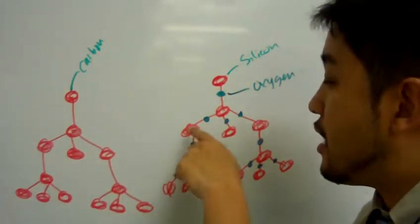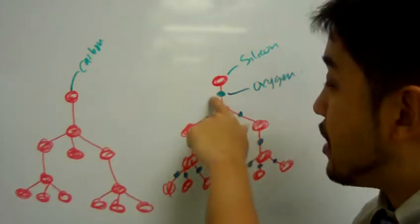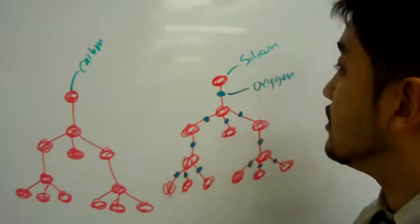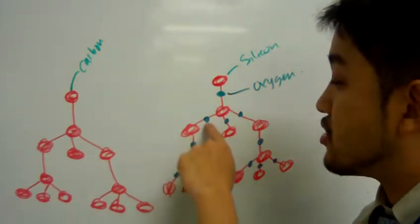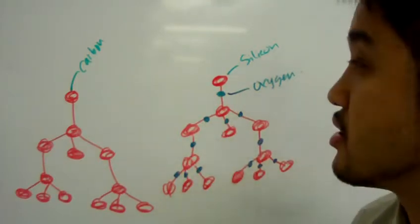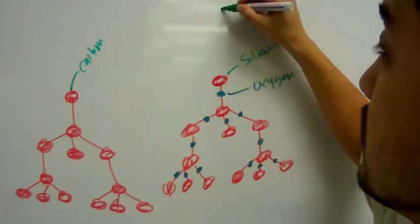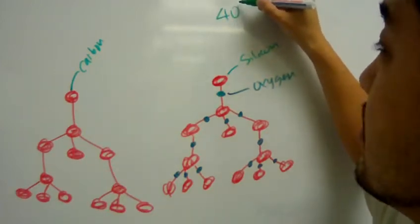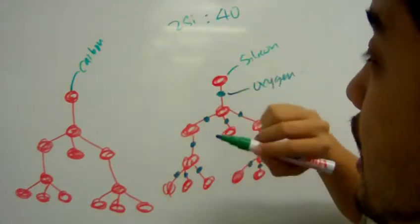Now, if you look at a silicon atom, it's bonded to four oxygen atoms. And each oxygen atom is bonded to only two silicons. So, you have a ratio of four oxygen atoms with two silicon atoms.